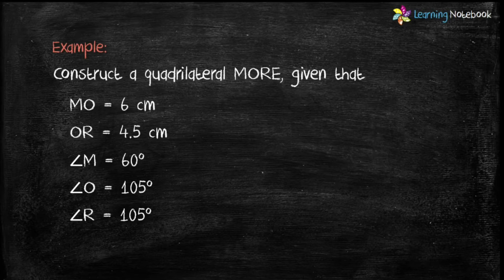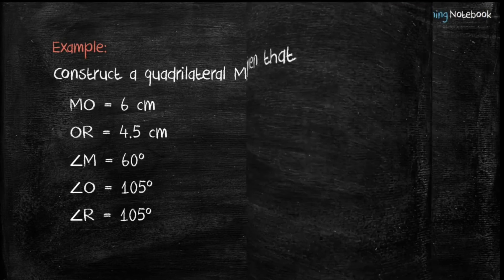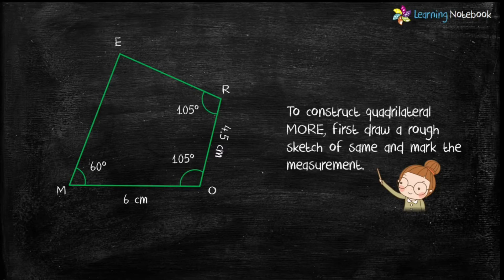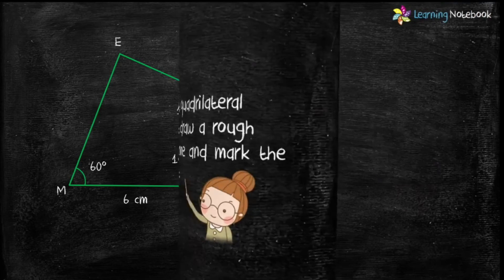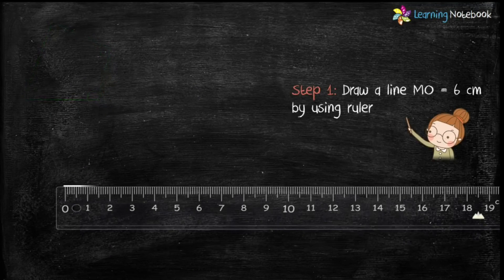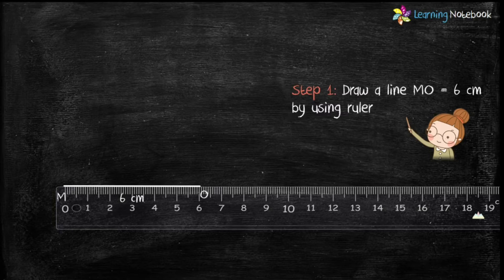So let's construct the quadrilateral. To visualize the construction, let's first draw a rough sketch and mark the given measurements. Step one: draw line MO equals 6 cm using a ruler.